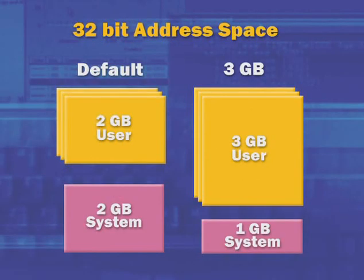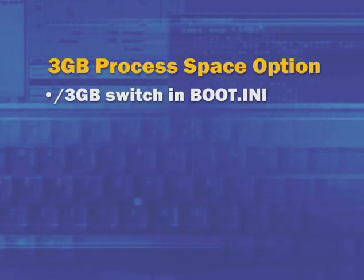Once support for the early MIPS platform was dropped, the requirement to keep the address space division at two gigabytes was also dropped. That permitted the varying address space layout that allows expanding the process address space up to three gigabytes. This option was added in Windows NT4 Service Pack 3 with the /3GB boot.ini switch, which causes the OS to shrink its own virtual address space to one gigabyte and allow a user process to grow up to three gigabytes.